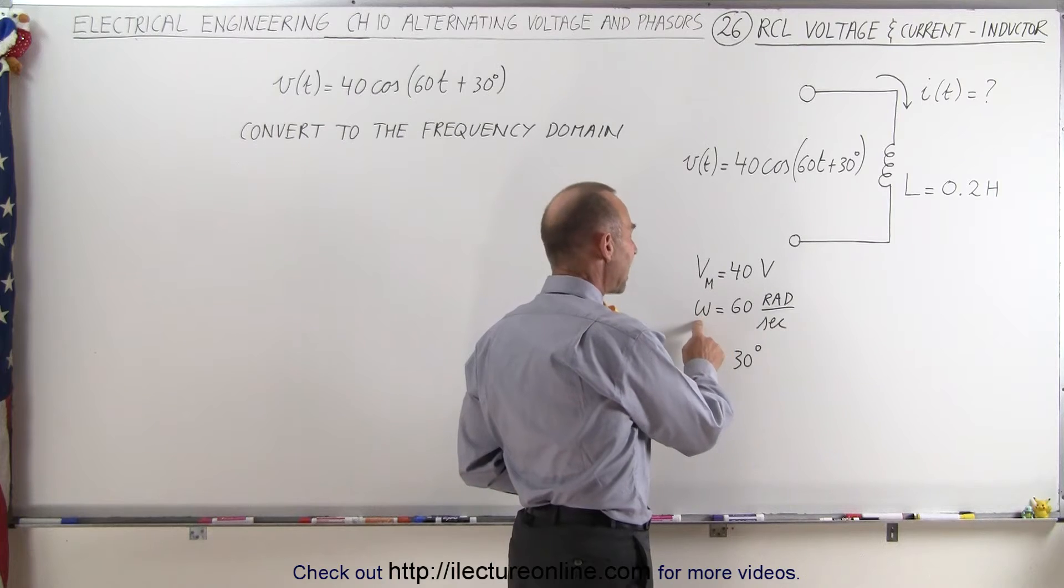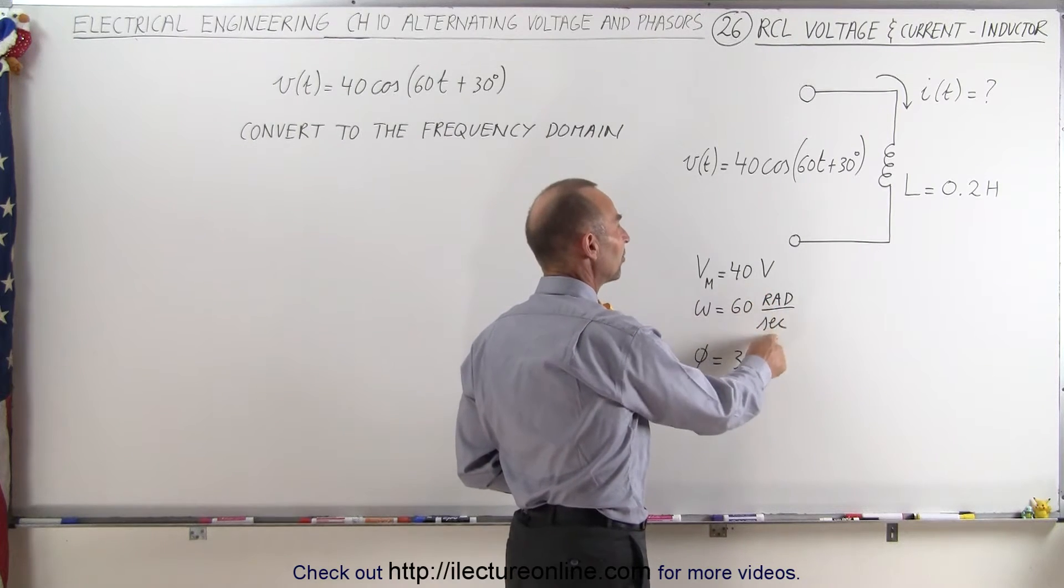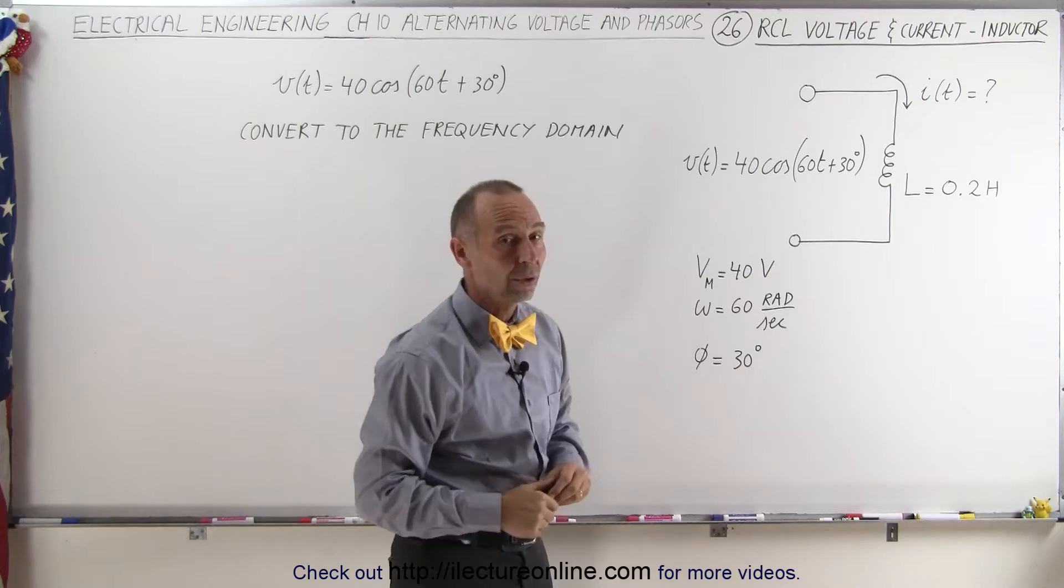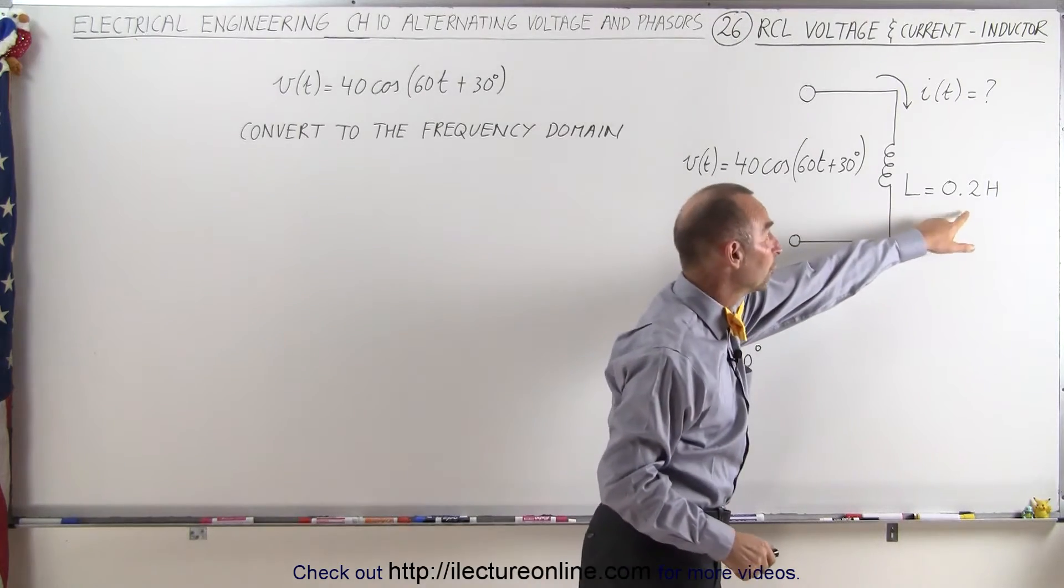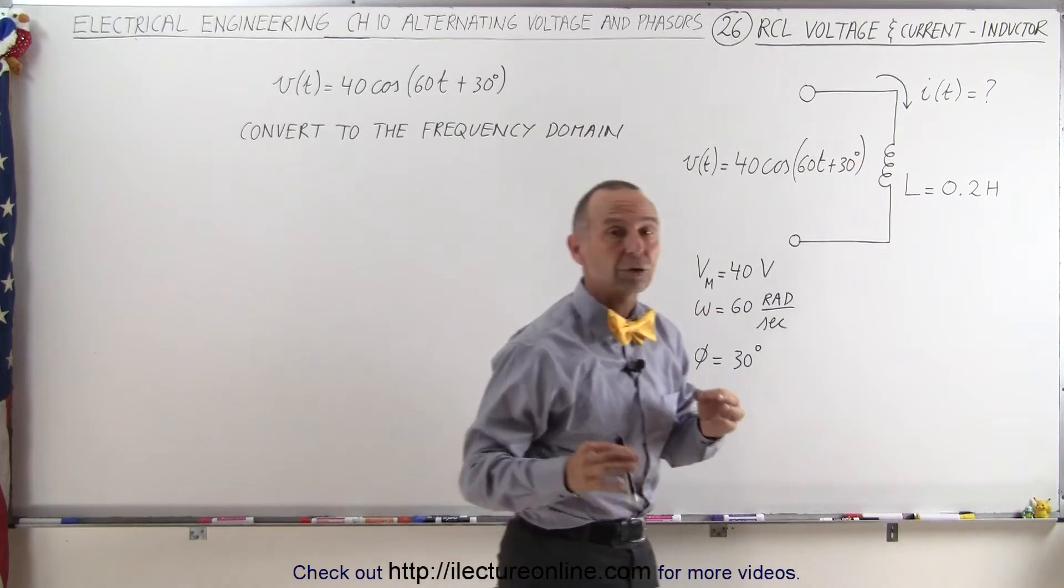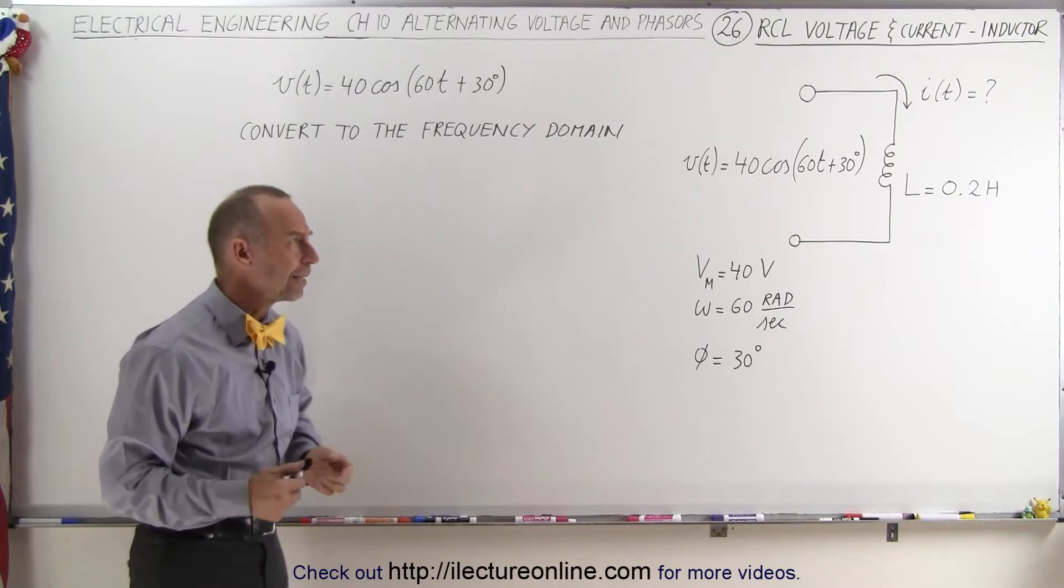That means that the angular frequency is 60 radians per second, and the phase angle is 30 degrees. The inductance is 0.2 henries, and they want us to find the current through the circuit. How do we do that?